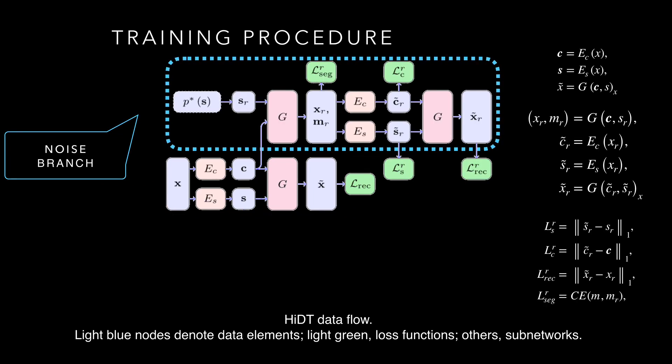In the noise branch, the original image is translated to a random style sampled from the prior distribution, and the obtained image is then fed to the autoencoder. Adversarial losses enforce the plausibility of the generated image and consistency with the sampled random style. Latent reconstruction losses are applied to the extracted content and style, while the image reconstruction loss compares the generated image with its reconstruction. The segmentation loss checks whether the obtained mask mimics the externally provided segmentation of the original image.